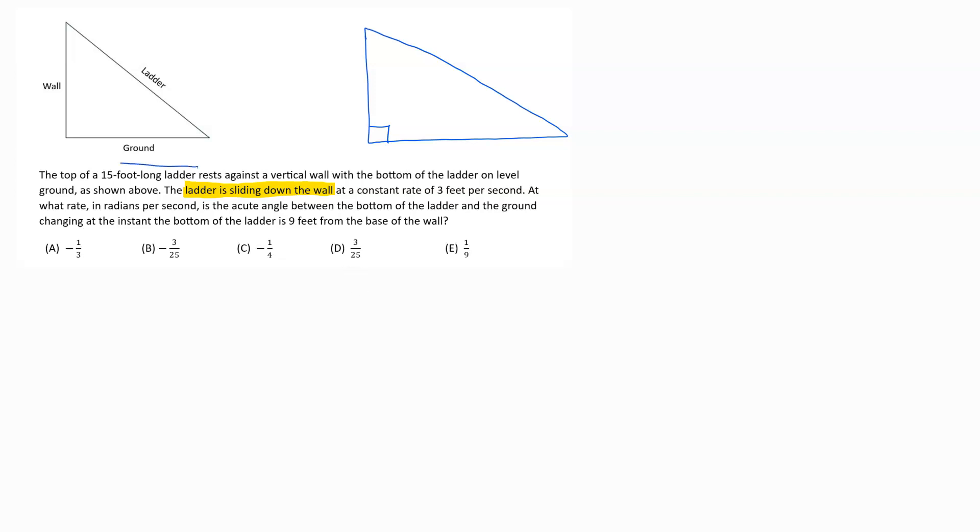So we've got a top of a 15-foot long ladder. When we're going to do this, there's two things to be aware of. You're either going to have rates - it'll either say rate or you'll see the word per in the units. These are going to be your derivative things, your dy dt's, dx dt's, dz dt's, whatever you want to label it. And then the other piece are constants, things that don't change. Those are going to be your x's, your y's, your z's.